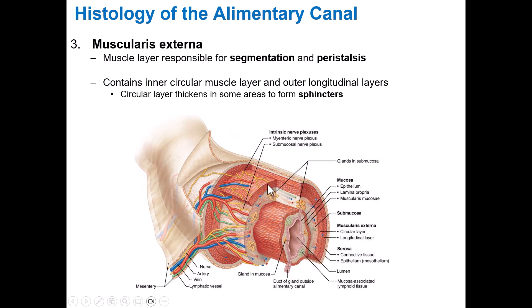There are two layers of smooth muscle tissue within the muscularis externa. The first is the circular layer — the muscle fibers run perpendicular to the tube, forming the perimeter. Just outside of that is the longitudinal layer, where muscle fibers run parallel to the tube. Having muscle layers running perpendicular to one another allows for maximum types of movement.